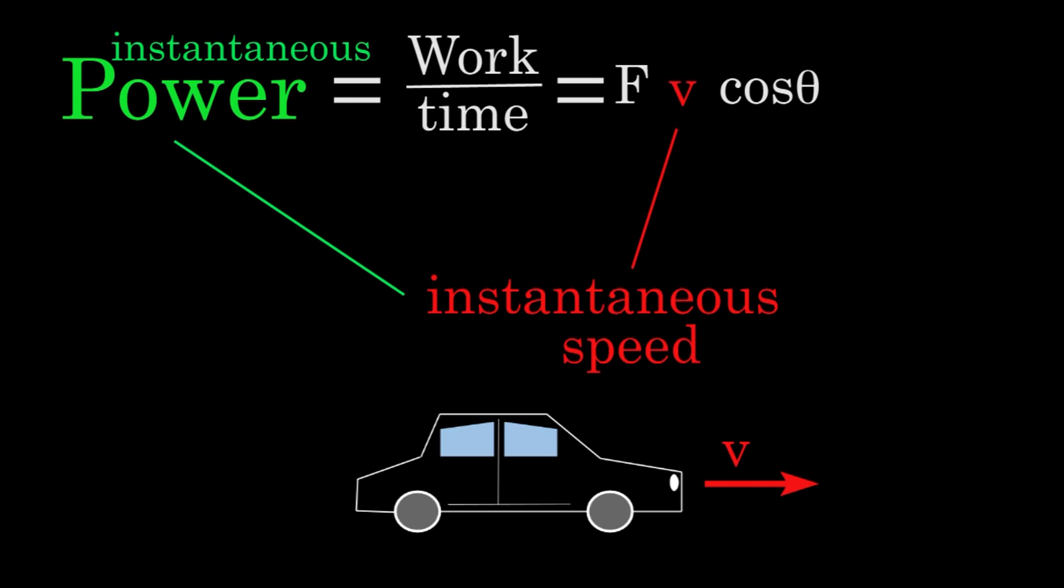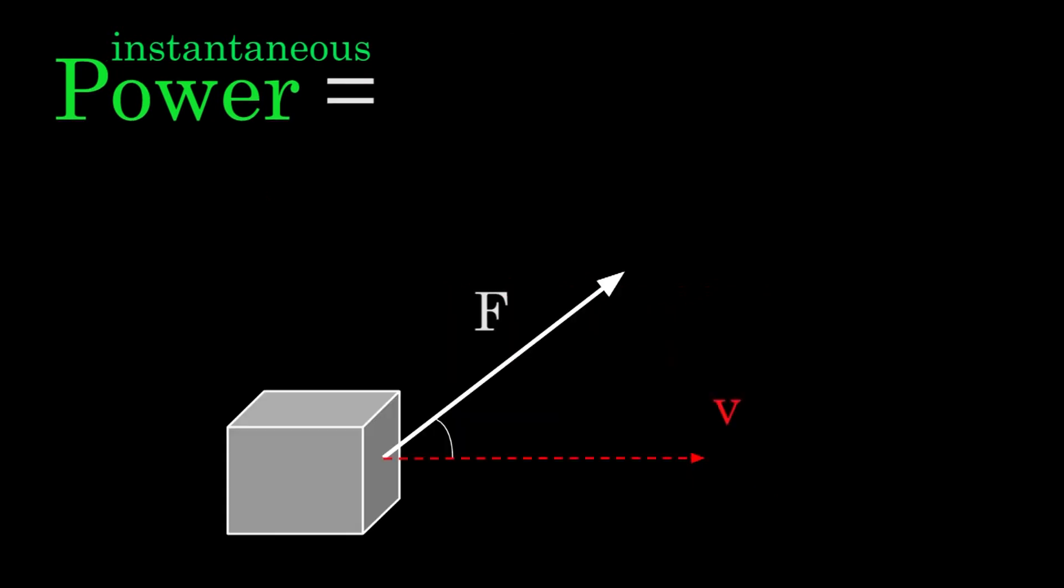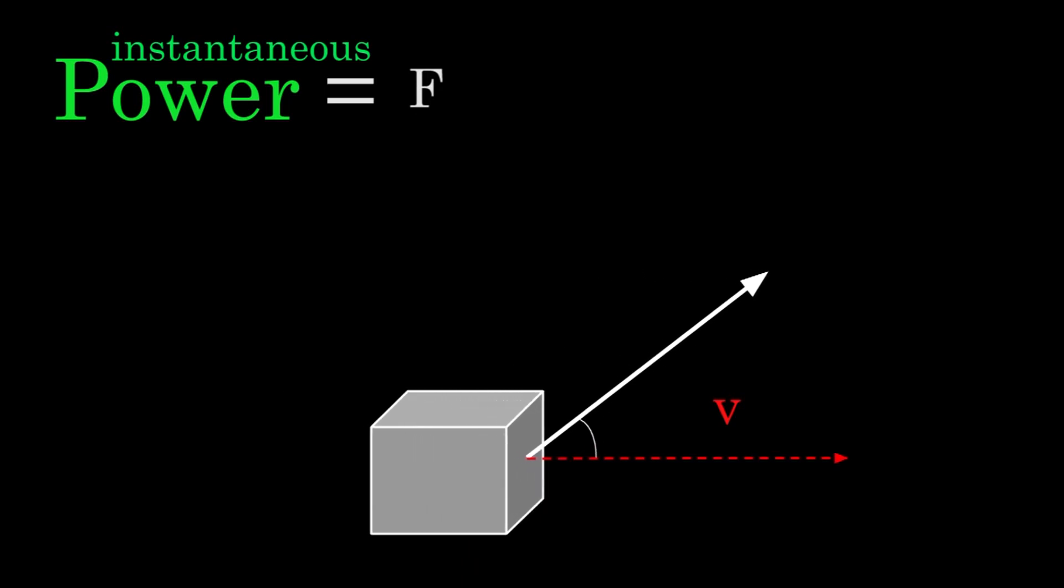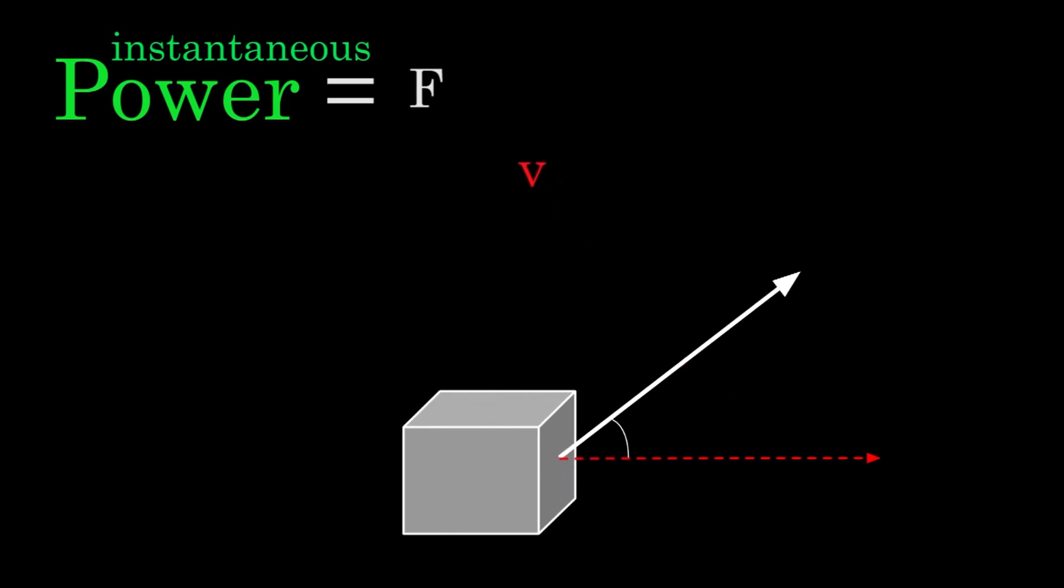So to find the instantaneous power output by a force, plug in the force on the object at a particular moment in time, multiply by the speed of the object at that same moment in time, then multiply by cosine theta. But be careful here, theta isn't any old angle. It's the angle between the force on the object and the velocity of the object.